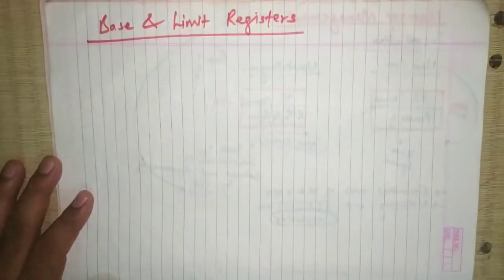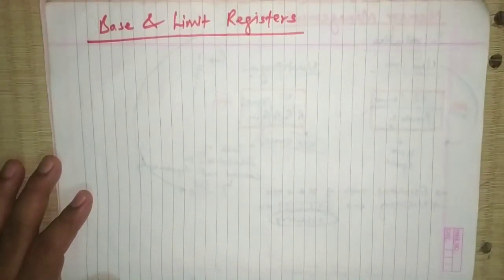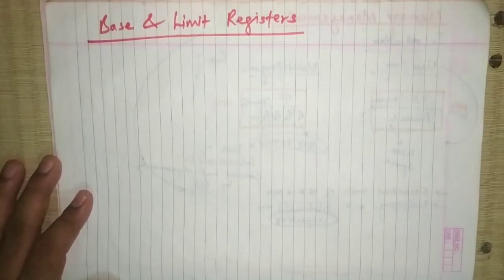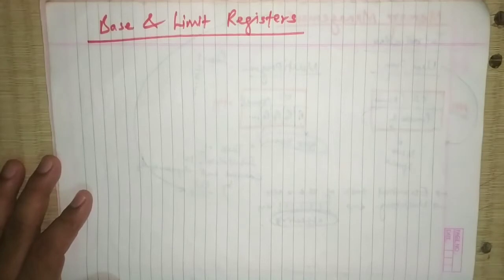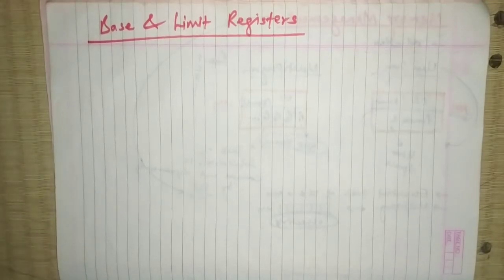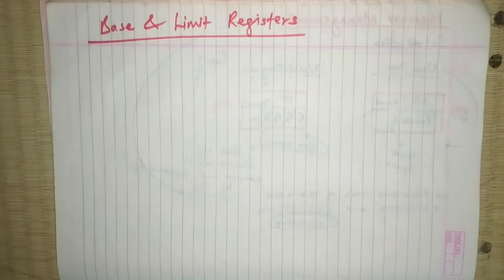Let us start with the next topic, that is base and limit registers. In the previous video we saw the introduction to main memory management, where we discussed that we have to manage the user space — that is, main memory — in such a way that multiple processes will be executed simultaneously without any problem.